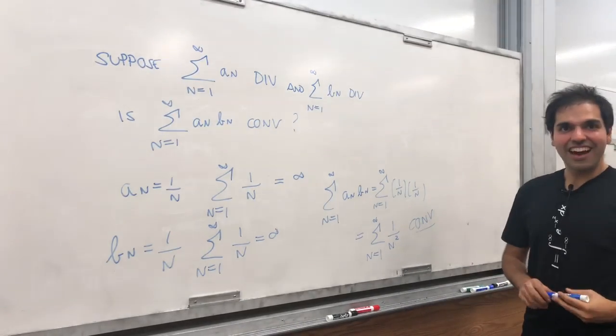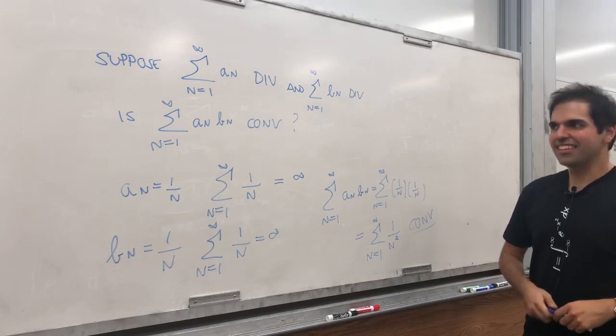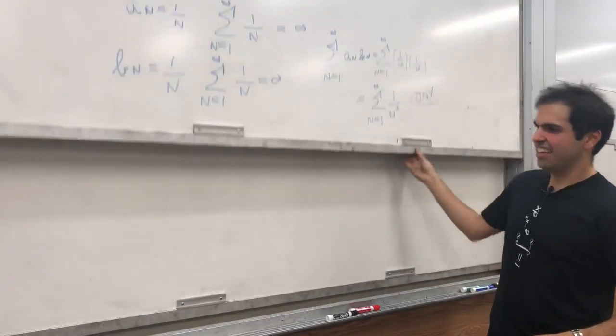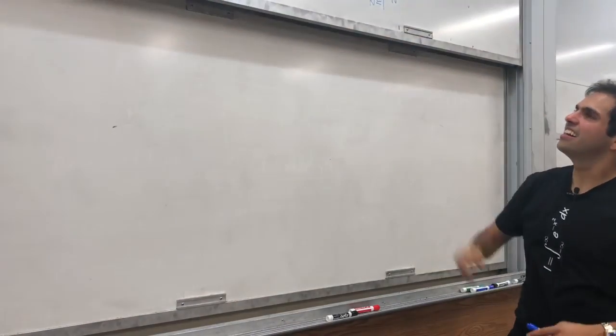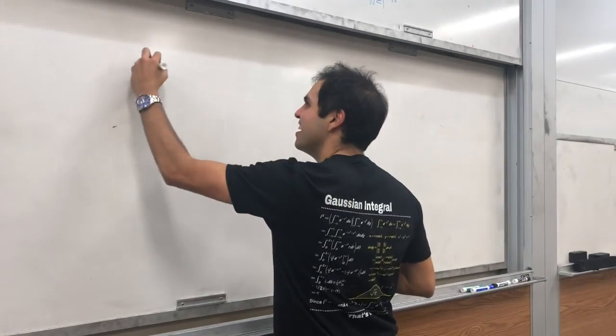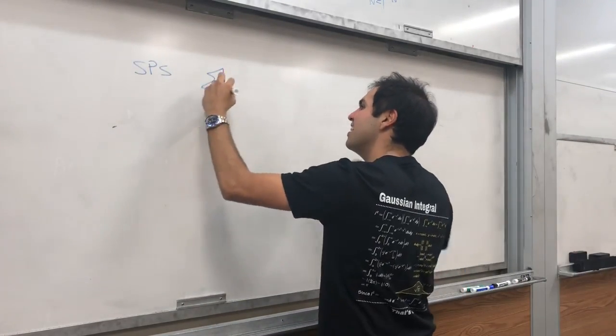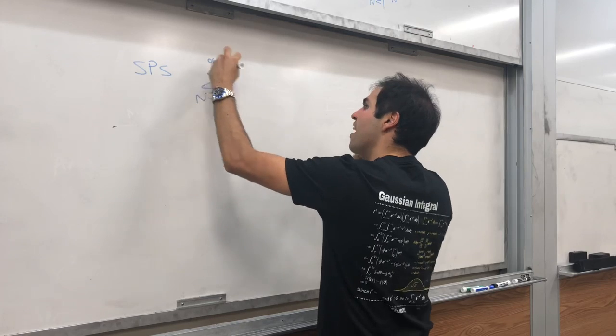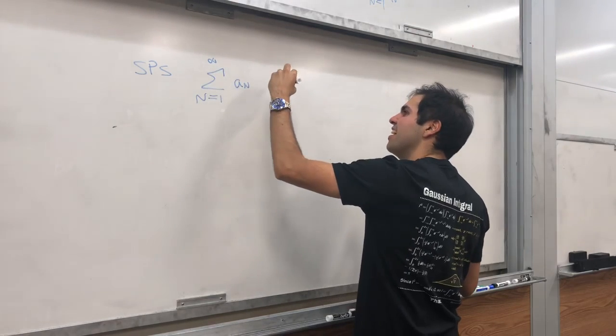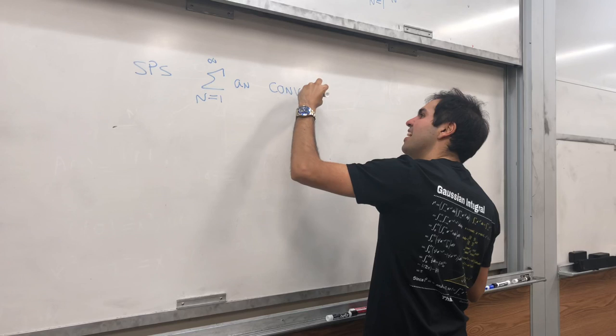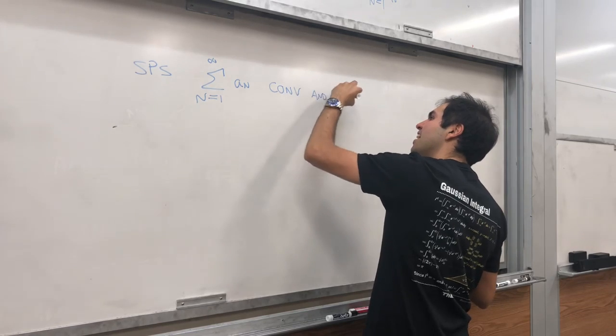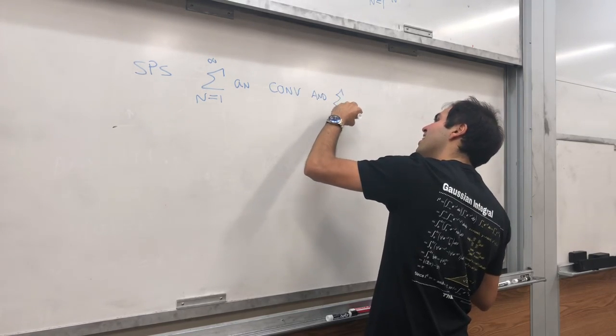Woohoo! Nice. Alright, next question for you. Please pull out the whiteboard. Suppose series a_n from 1 to infinity, this time converges. And another series, from 1 to infinity, b_n, also converges.